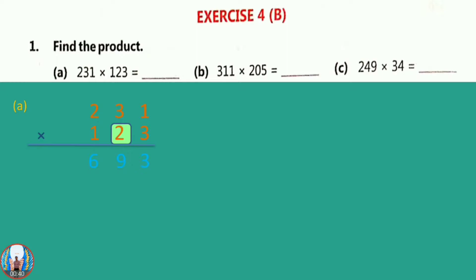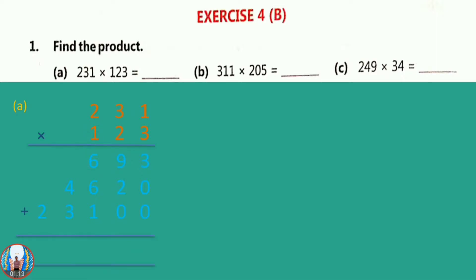When we are multiplying by the tens place, we start writing the answer also from the tens place. So 231 into 2 is 462, but the ones place is blank so we will put a zero there. Now we will multiply 1 into 231. We are multiplying by the hundreds place, so we write the answer from the hundreds place, putting two zeros. Now we add all the answers and the answer is 28,413.